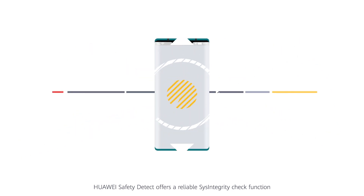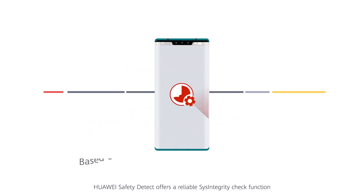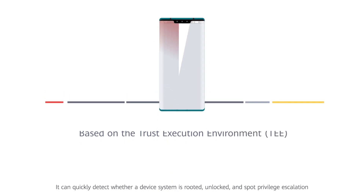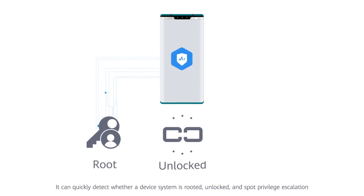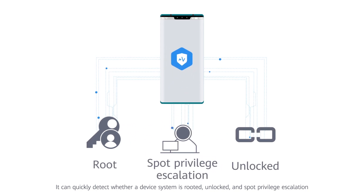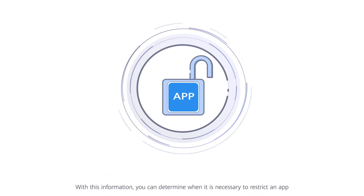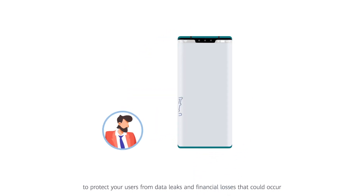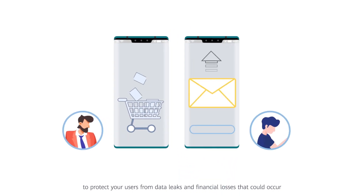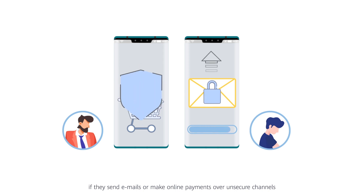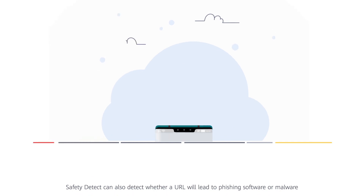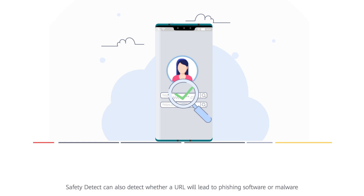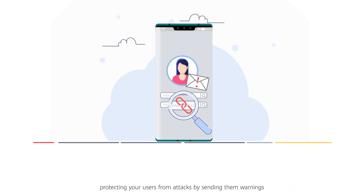Huawei Safety Detect offers a reliable SysIntegrity check function based on the Trust Execution Environment, or TEE. It can quickly detect whether a device system is rooted, unlocked, and spot privilege escalation. With this information, you can determine when it is necessary to restrict an app to protect your users from data leaks and financial losses that could occur if they send emails or make online payments over unsecured channels. Safety Detect can also detect whether a URL will lead to phishing software or malware, protecting your users from attacks by sending them warnings.